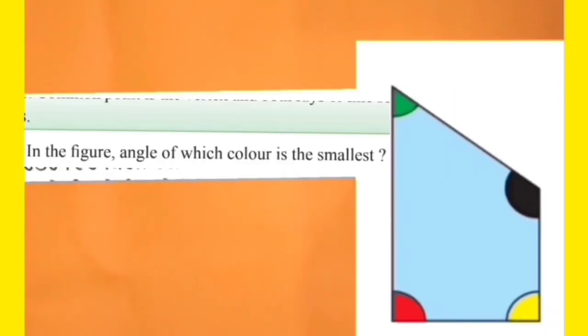Dear students, now look at this picture very carefully and tell that in the figure, angle of which color is the smallest. After carefully looking at this picture, we come to know that the green colored angle is the smallest out of all these four angles. So the answer is green colored angle.